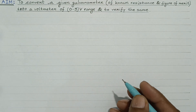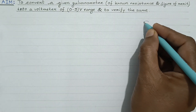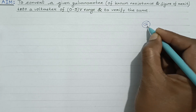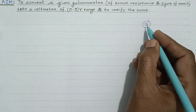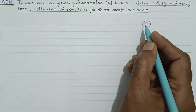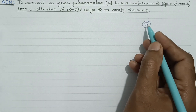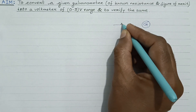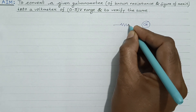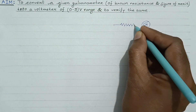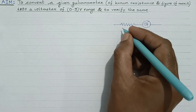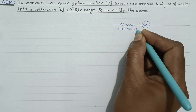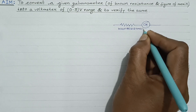Let's concentrate on the circuit diagram. Suppose this is a galvanometer whose figure of merit and resistance is known to us. G is the resistance of the given galvanometer. Now suppose it needs to be converted into a voltmeter of range 0 to 3 volt. For that, a very high resistance wire is to be connected in series to this galvanometer coil. We will denote it by capital letter R.